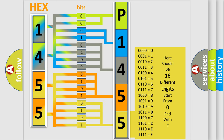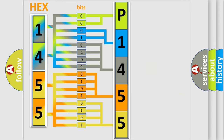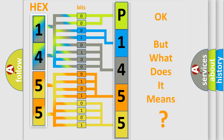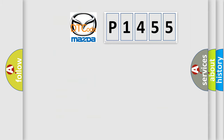We now know in what way the diagnostic tool translates the received information into a more comprehensible format. The number itself does not make sense to us if we cannot assign information about what it actually expresses. So what does the diagnostic trouble code P1455 interpret specifically for Mazda car manufacturers?